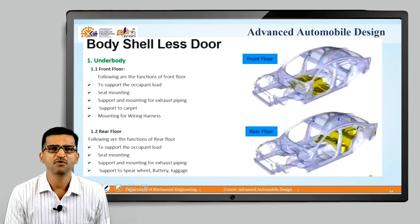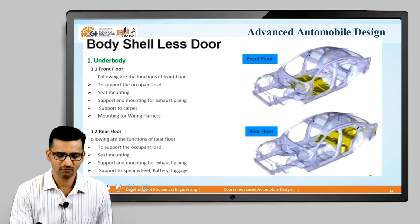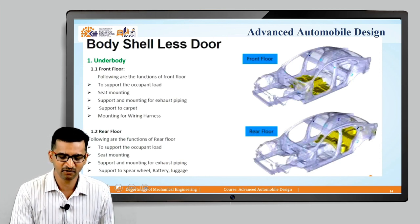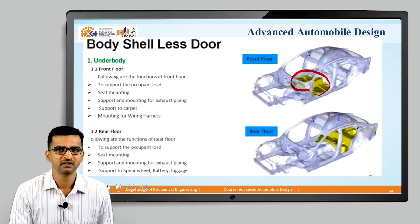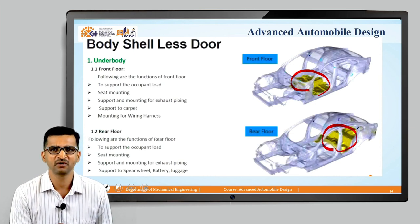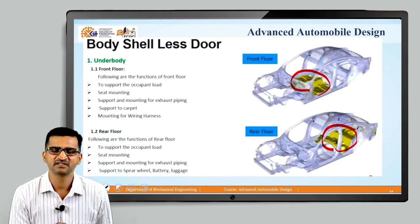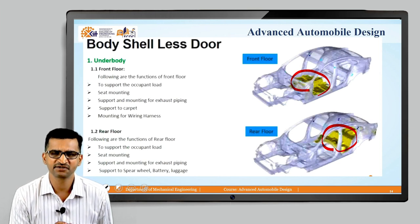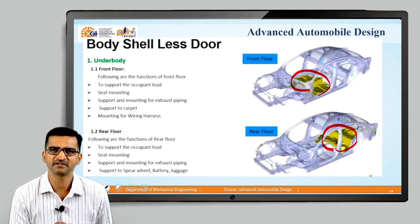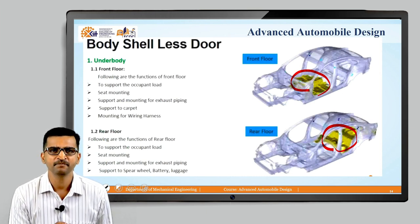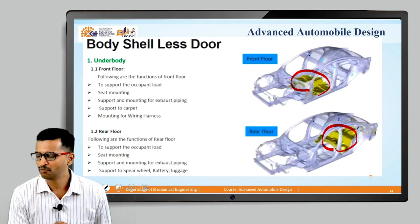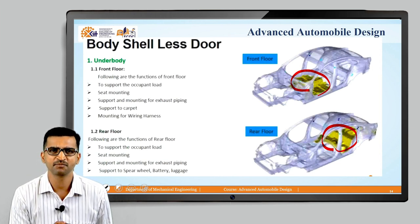This is the body shell less door — the underbody. You can see here the front floor and rear floor. The front floor's main function is to support the occupant load and transfer it, because the seats are directly connected to these underbody structures and all the weight of the passenger is transmitted through these members to the main body. These are also the mounting points for the seats and they support the carpet. The same applies for the rear floor.